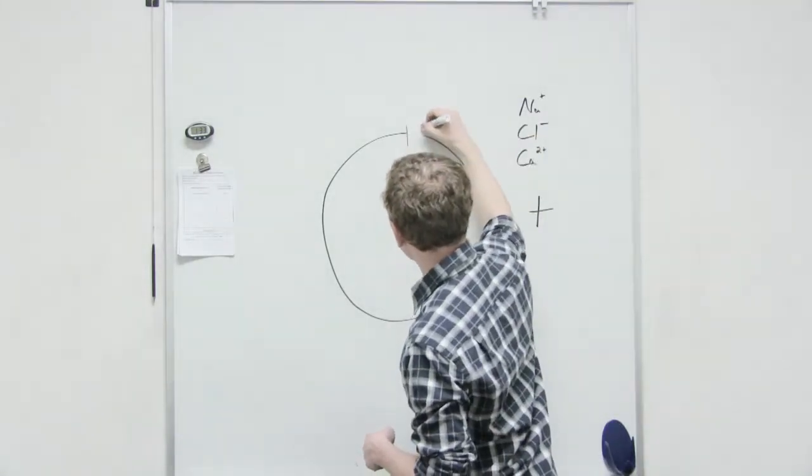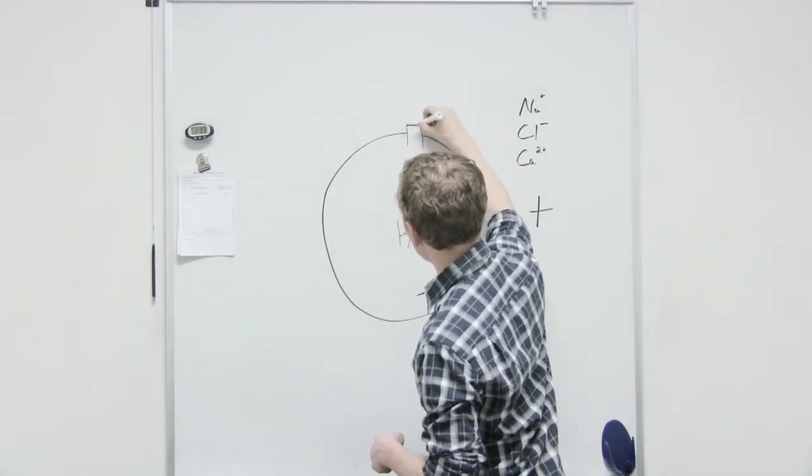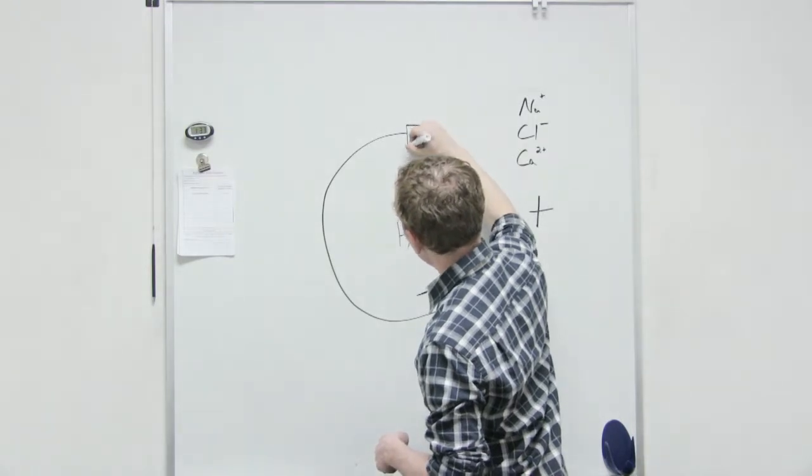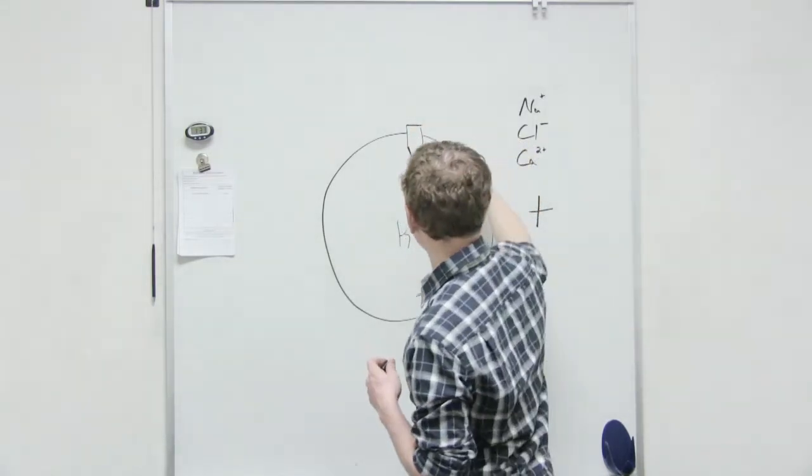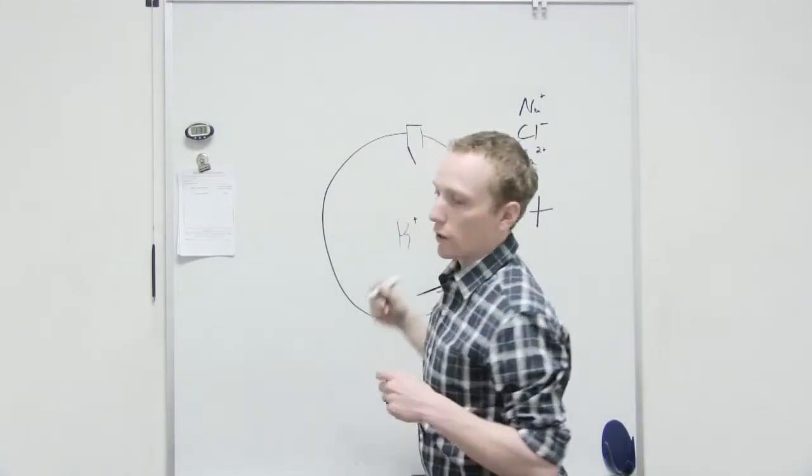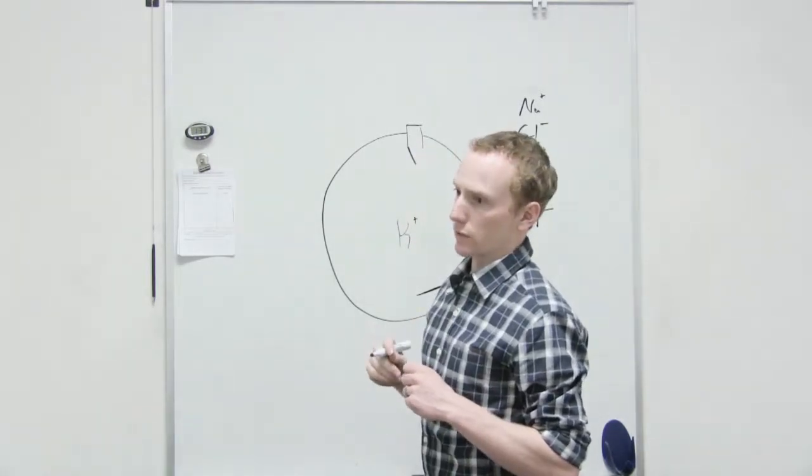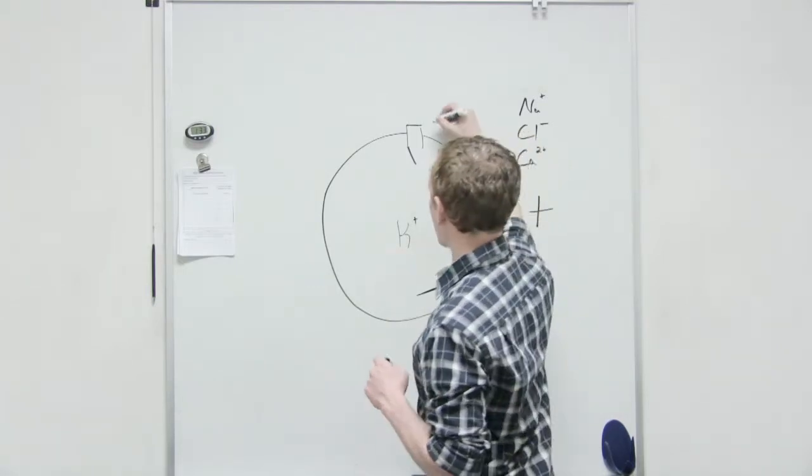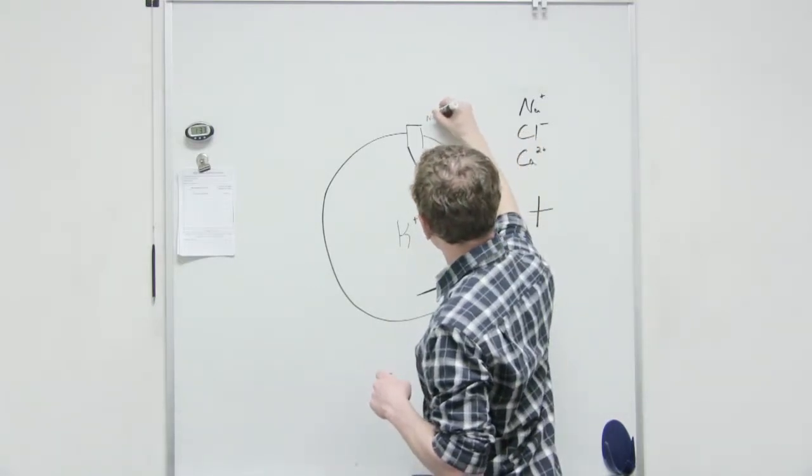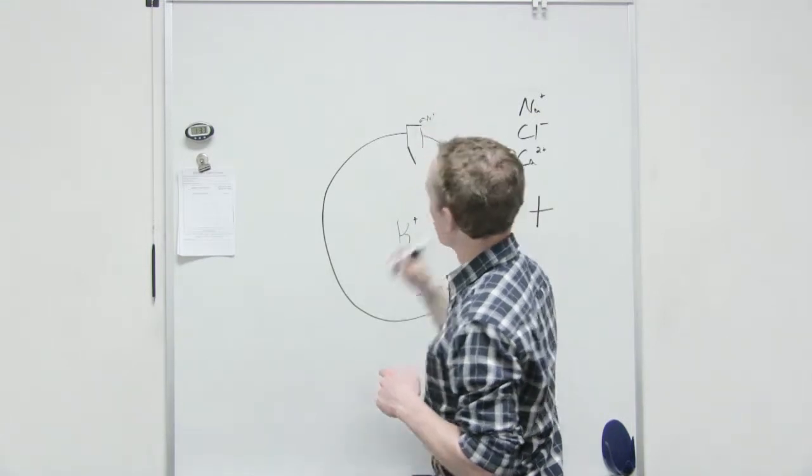The sodium one has what's called an activation gate and an inactivation gate. So, sodium would want to flow where? Because of its concentration gradient, in or out of the cell? Inside. So, it wants to go inside.